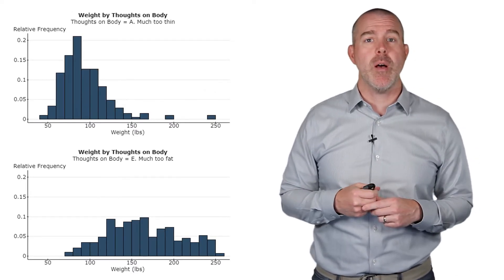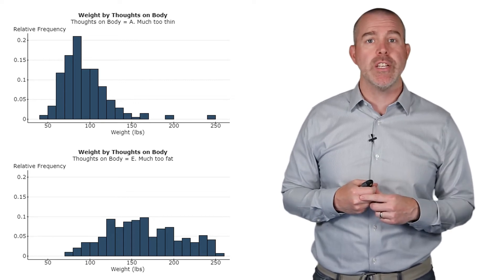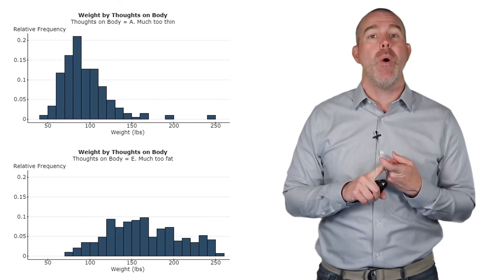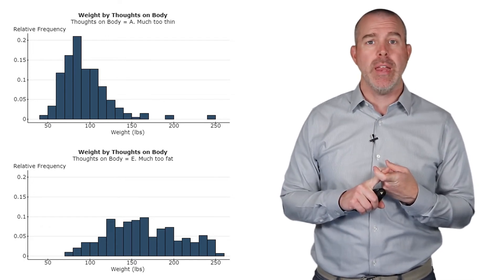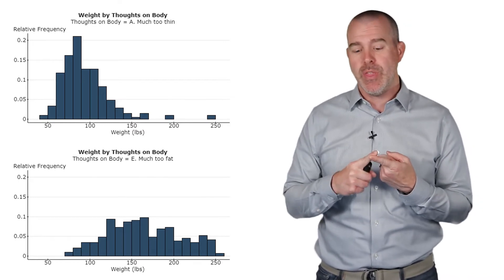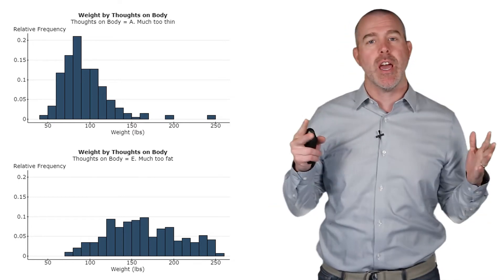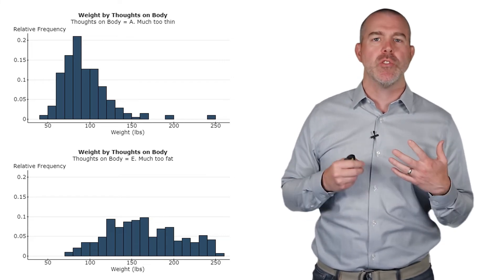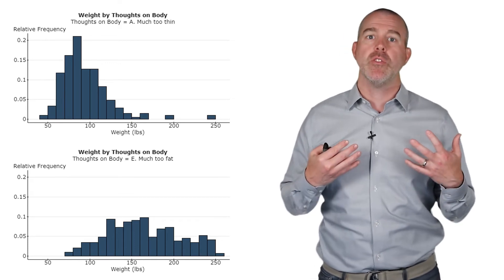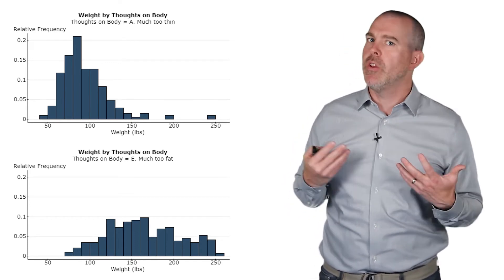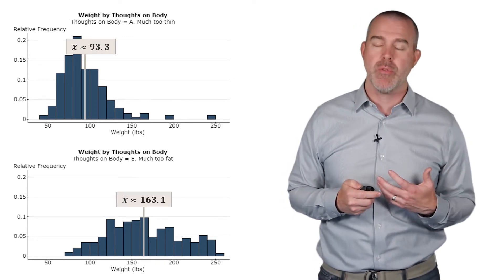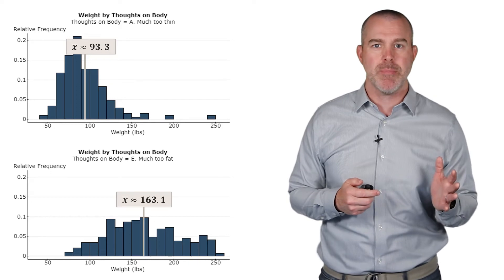Here's another one. This is from the Health Behaviors in School-Age Children database. Again, I'll put that link in the description. I have the weight, the histogram of the weight. And it's grouped by the individual's thoughts on their body. So I have the much too thin up here and then the much too fat. So kind of both ends of the spectrum. And you would expect, for those who feel they're much too thin, to have a lower average weight. And for those who think they're much too fat, to have a higher average weight. And you can clearly see that on the histograms. So the means are different, 93.3 versus 163.1. So this is as expected.